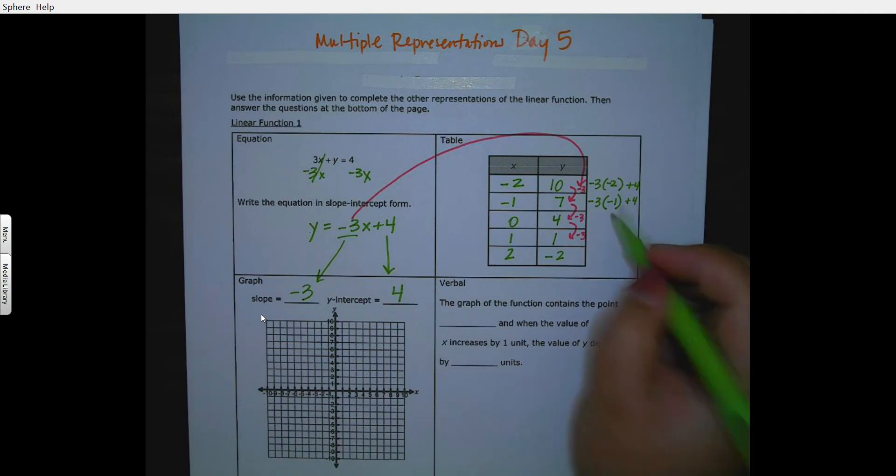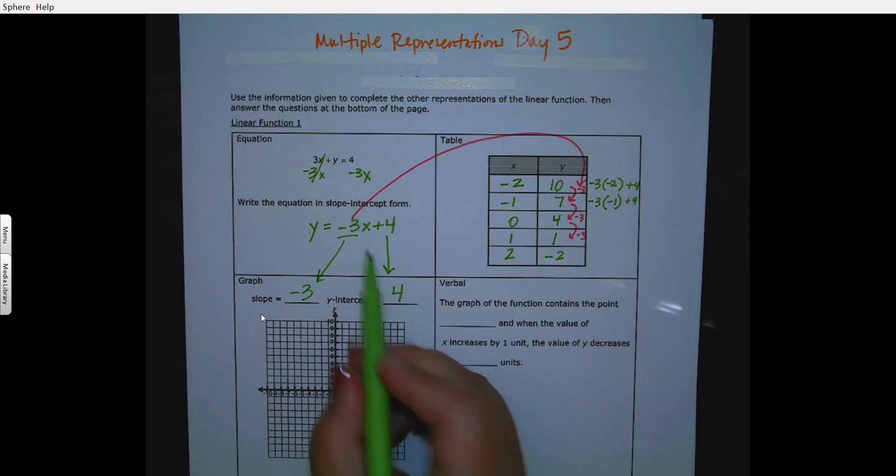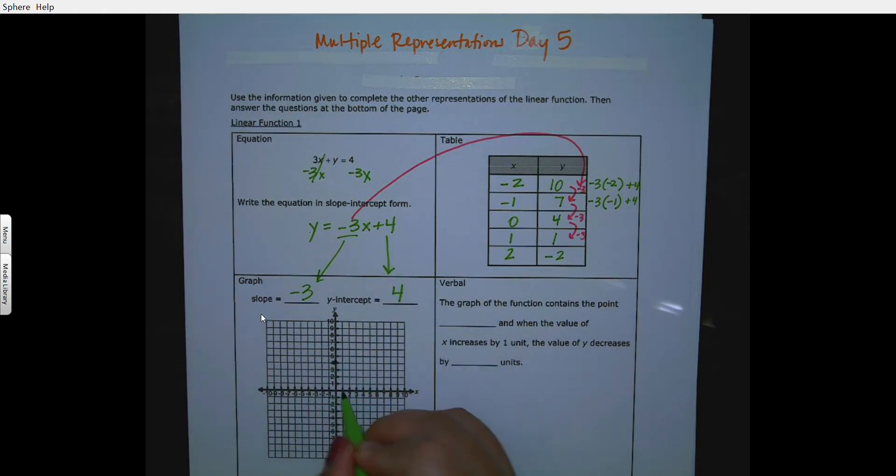I think that's a little easier than doing the arithmetic part. If you want to do the arithmetic part, go ahead. Starting on my graph, I'm going to start at 4 and I'm going down 3 to the right 1, down 3 to the right 1.